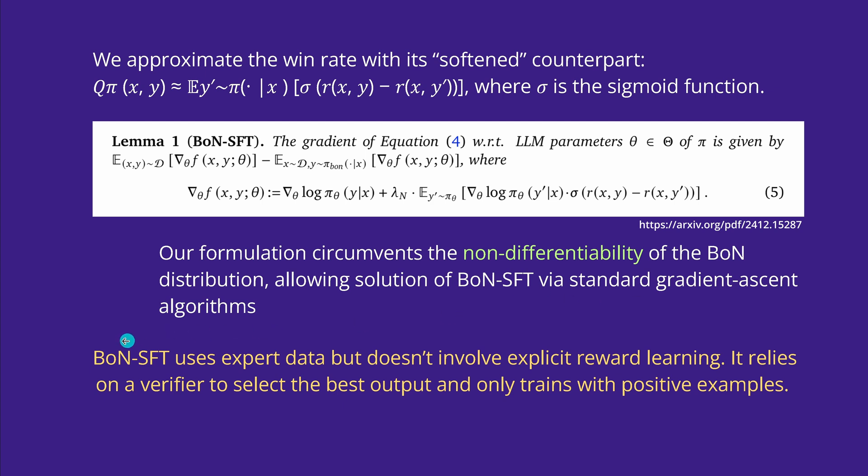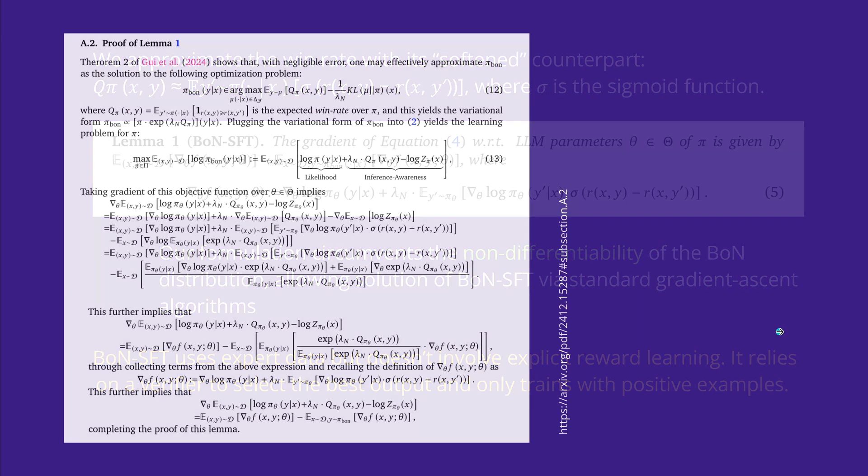Remember, in our last supervised fine-tuning inference-aware code we use expert data, but in the methodology there was never an explicit reward learning. It relies on a verifier to select the best output and only trains with positive examples. So we are missing out on something.